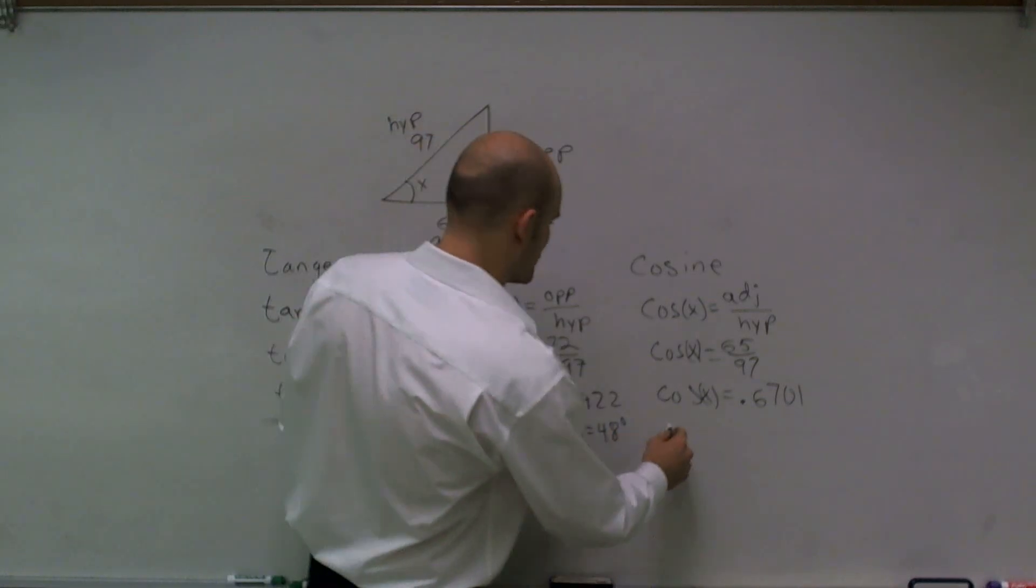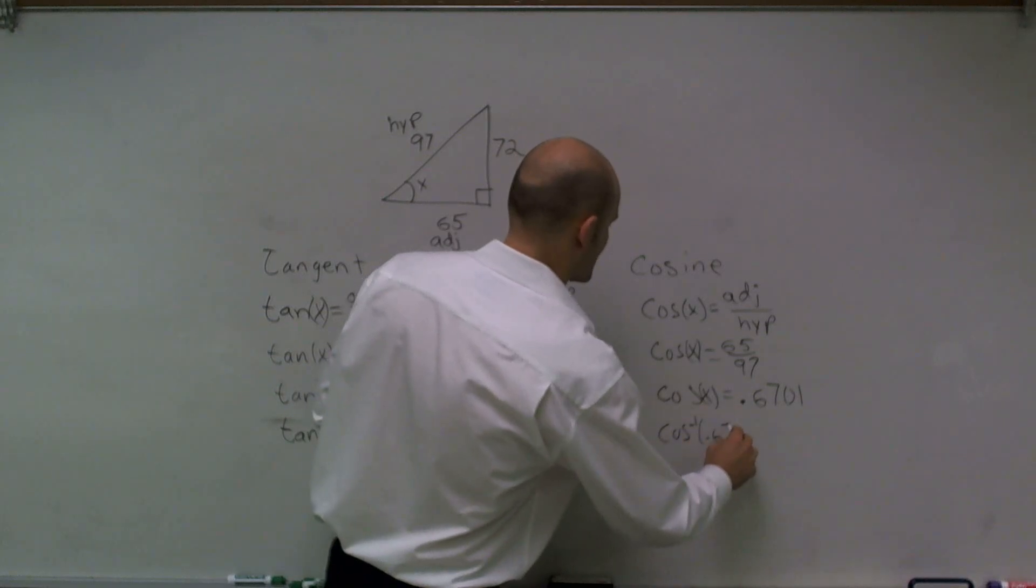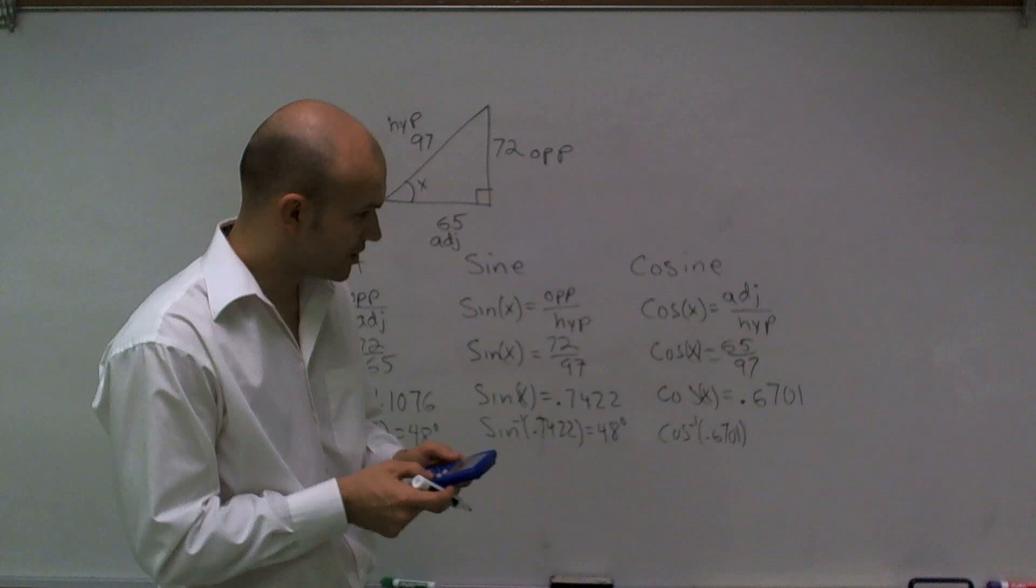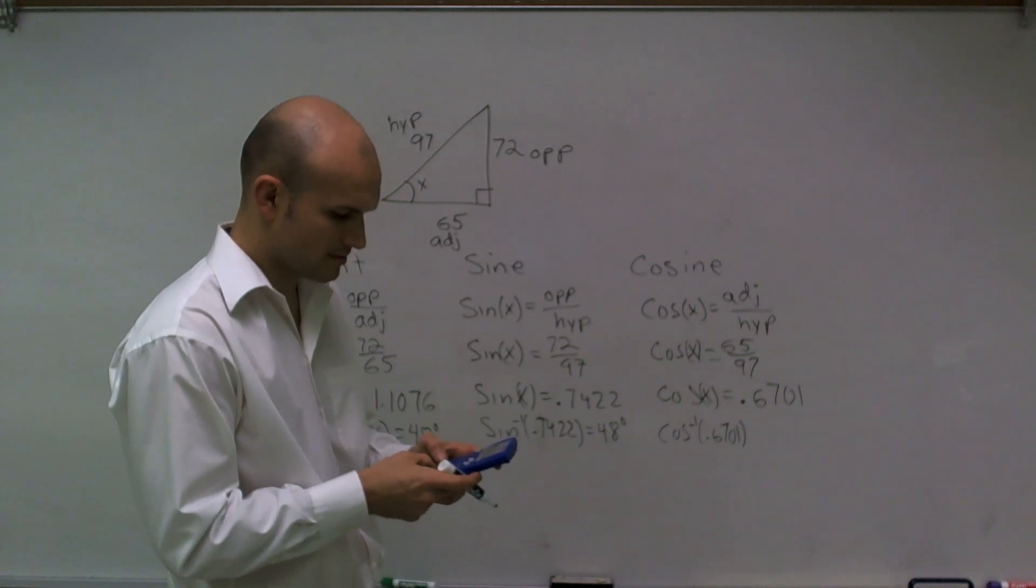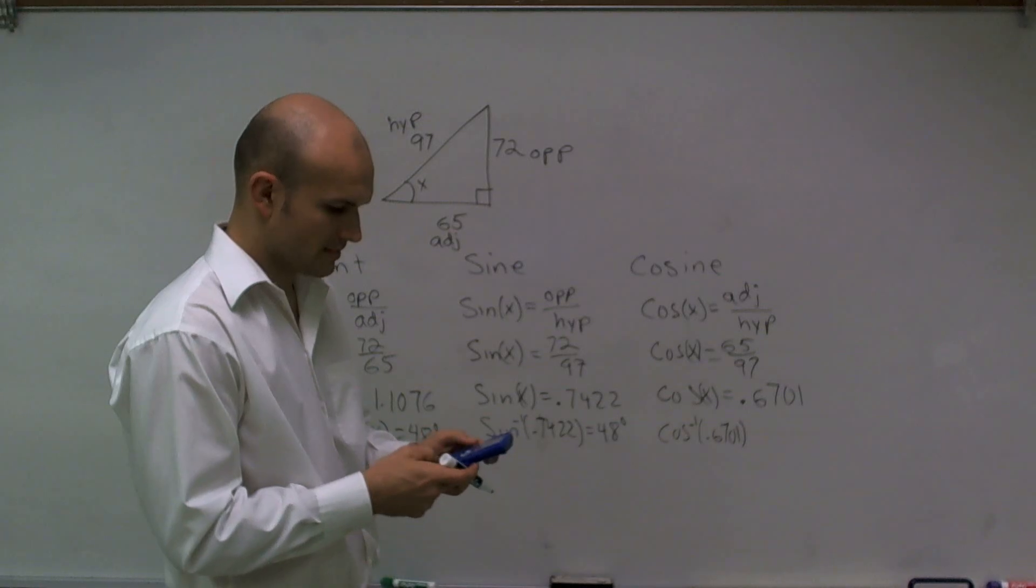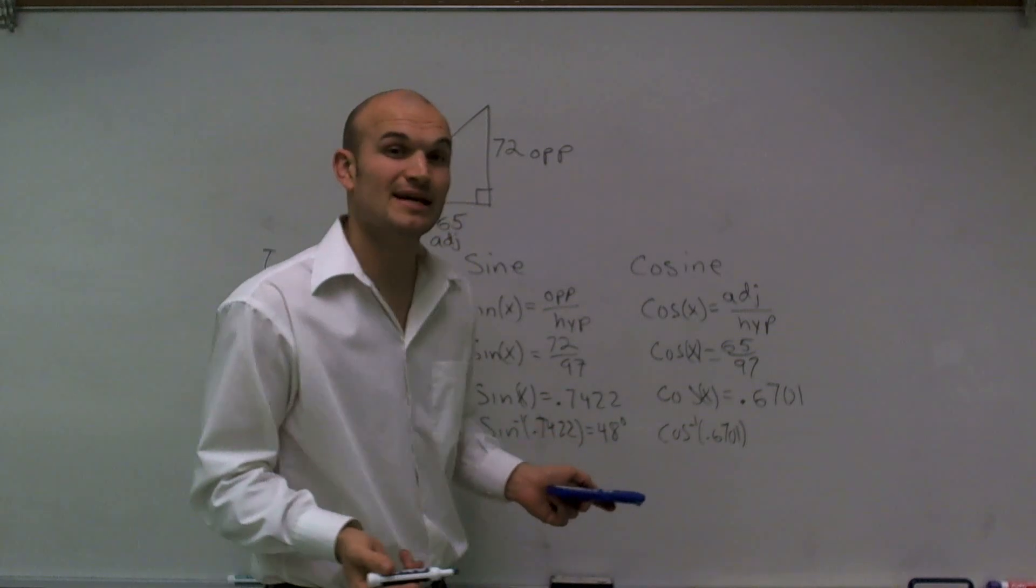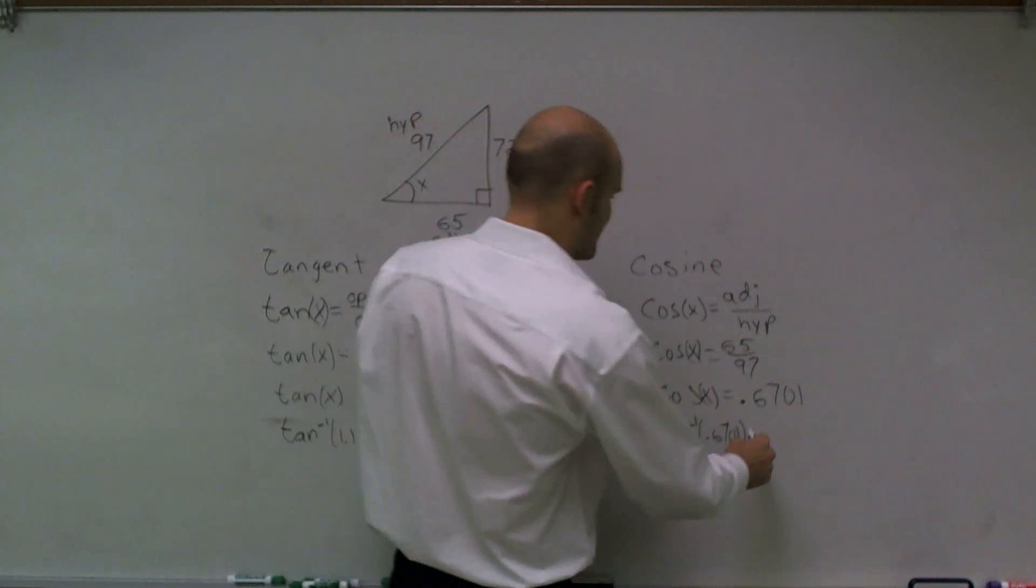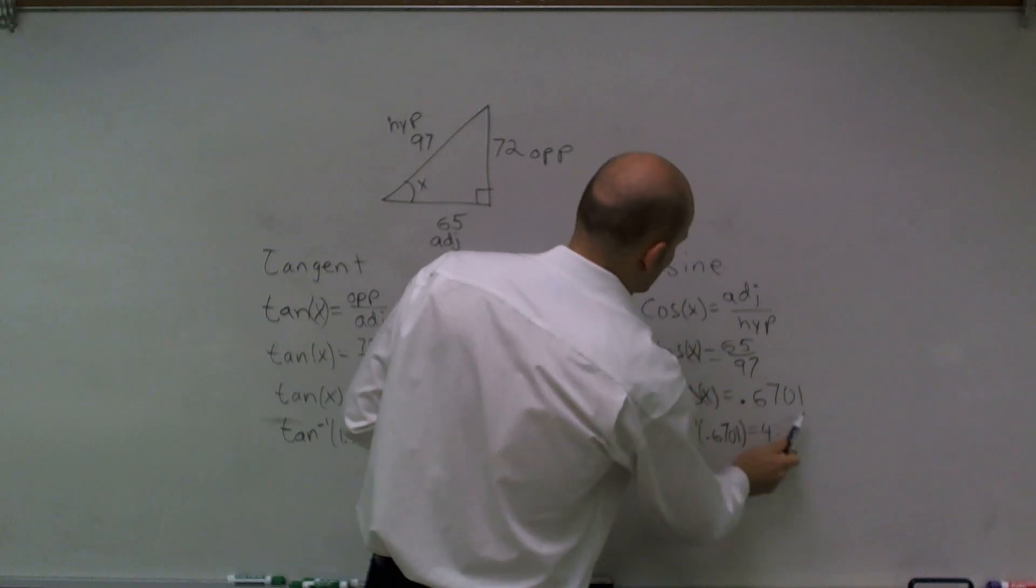Lastly, I'll do inverse cosine of 0.6701. So I have 65 divided by 97, and then inverse cosine of that full answer is going to give me again 47.9, which you can round to 48 degrees.